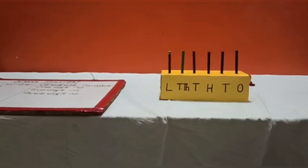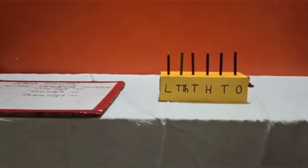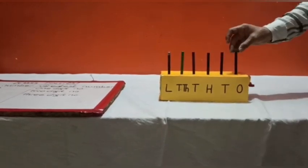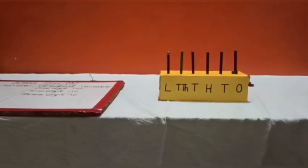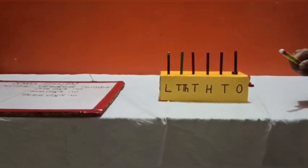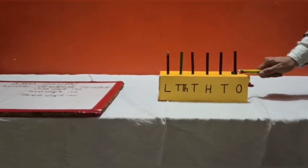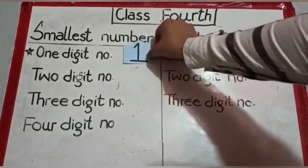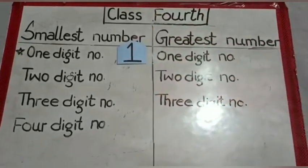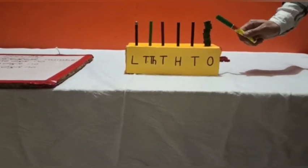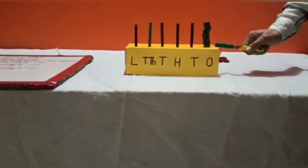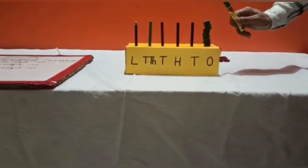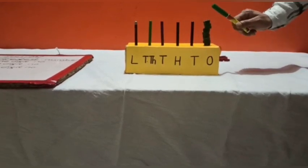Now students, when we start to put beads in the one's rod, we start from 1. So students, the smallest 1-digit number is 1. Now, we can put a maximum of 9 beads in one rod. So the maximum 1-digit number — that is, the greatest 1-digit number — is 9.